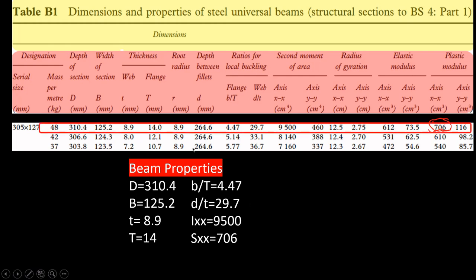We are going to adopt this beam 305×127×48 and we write down the properties. These are the properties that you are going to use in our calculations. The D that's the depth, the breadth, the T, small t, capital T, and all these values.